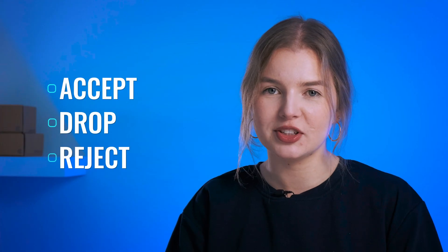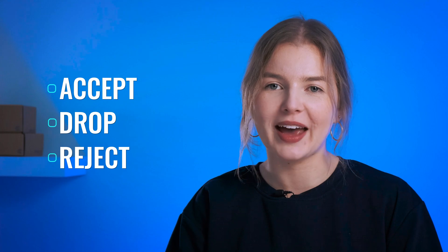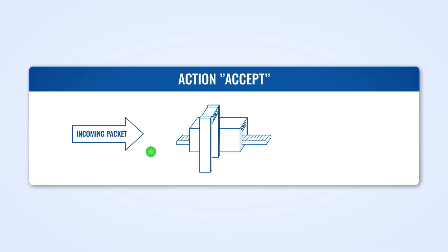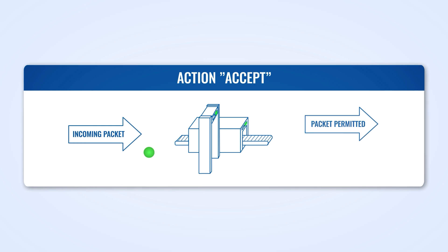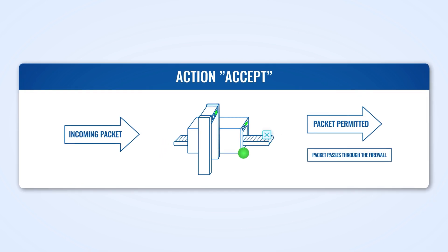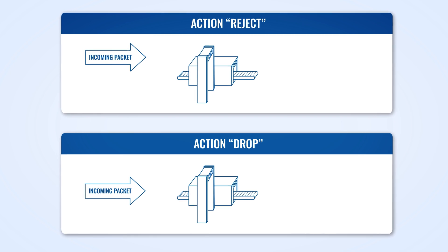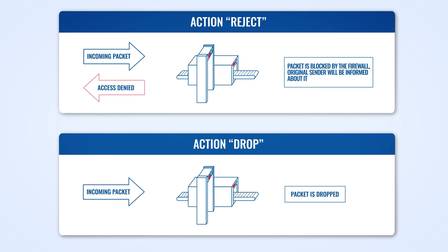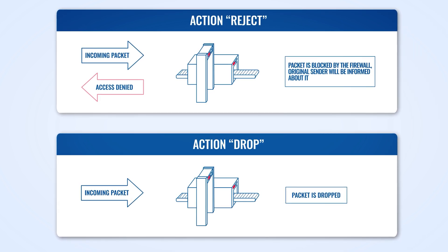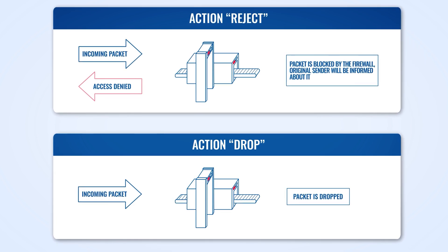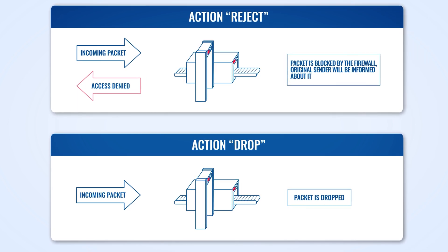It can accept, drop, or reject an incoming or outgoing packet. Accepting allows outgoing traffic from your local network or incoming traffic from the internet to reach its predetermined destination. Dropping and rejecting are actually very similar to one another. The only difference is that by performing the reject action, the firewall notifies the packet sender that connection or data retrieval is impossible. Dropping simply blocks the request without notifications.